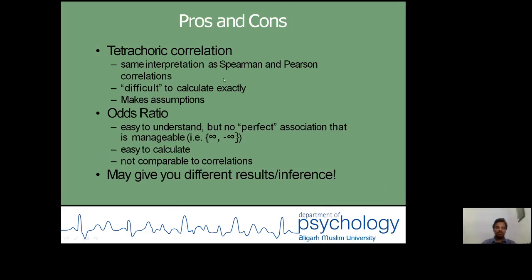Pros and cons of the tetrachoric correlation: same interpretation as you used to make in terms of the Spearman and Pearson product moment correlations. Difficult to calculate exactly as we have been doing in other cases. It makes assumptions about the distribution of the dataset. Odds ratio, easy to understand, but no perfect association that is manageable. Easy to calculate, not comparable to correlations. The tetrachoric correlation coefficient may give you different results or inferences.